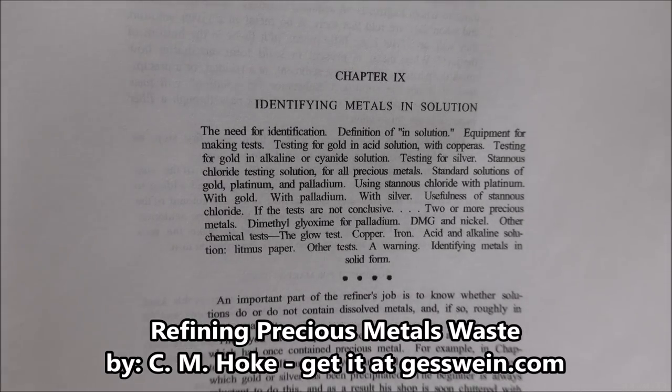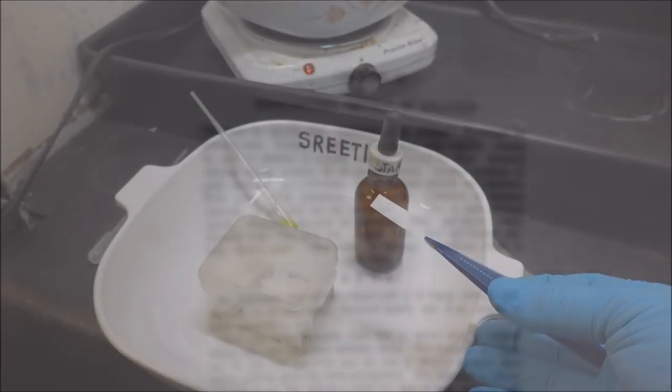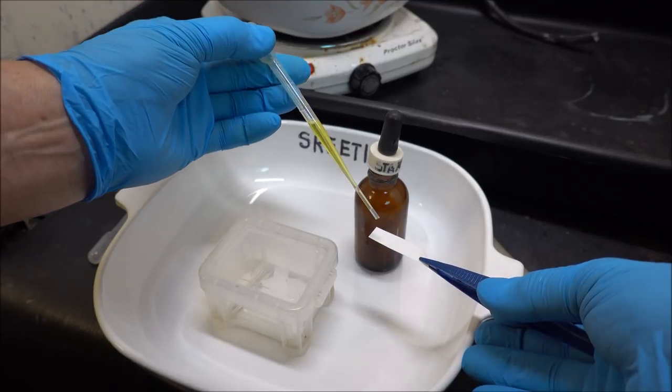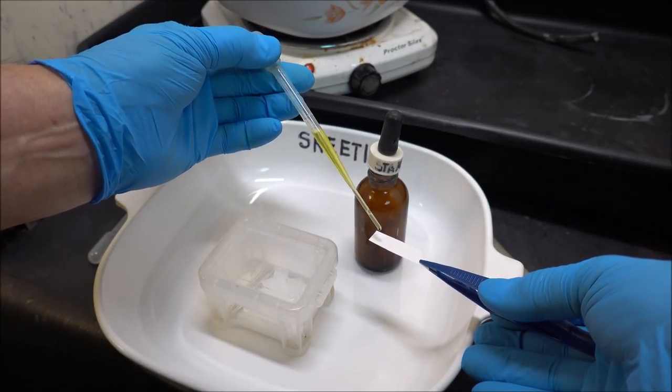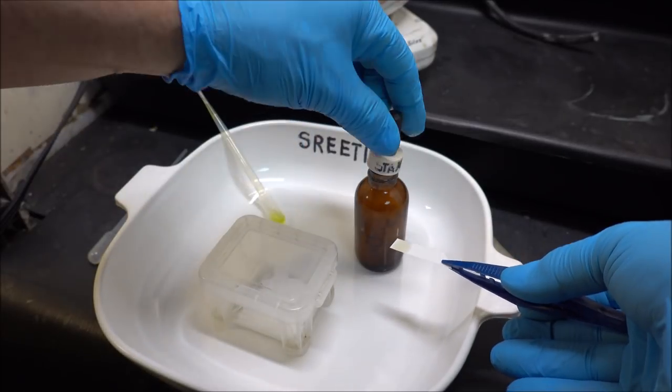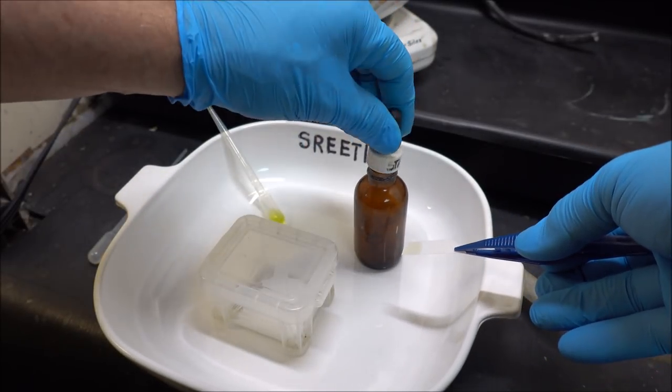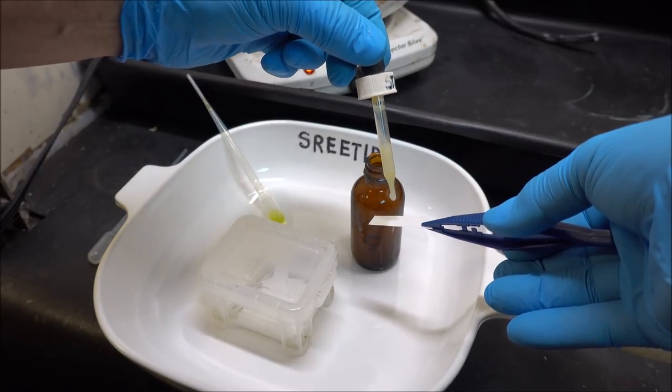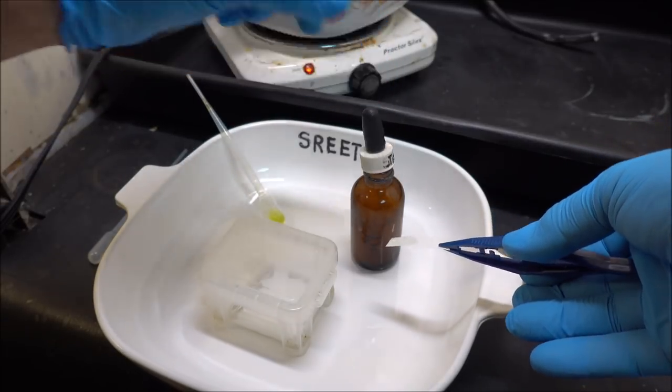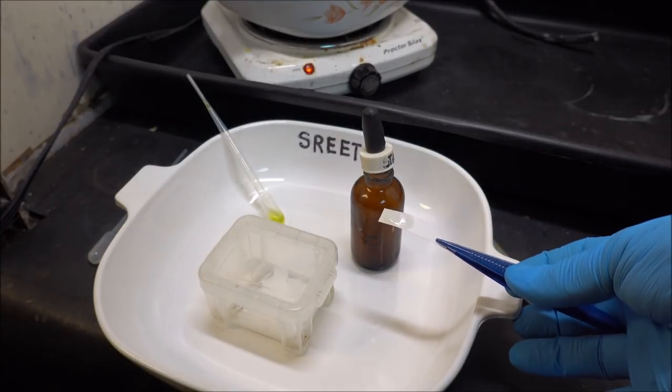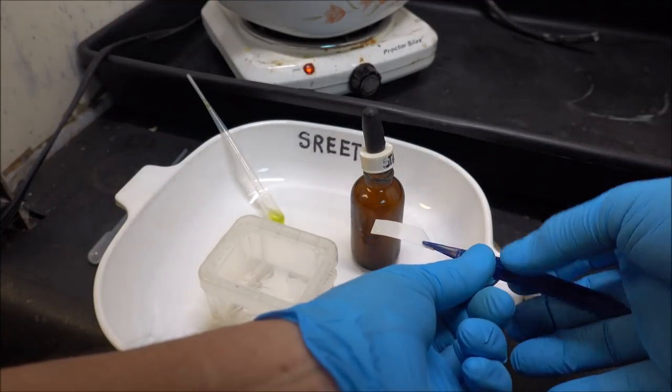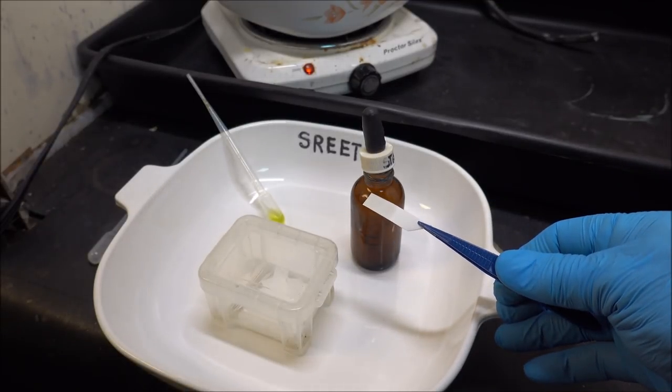I got the information for identifying those metals in solution out of Hoke's book in Chapter 9, Identifying Metals in Solution. Before we go any further, I'm going to put a little bit of our solution on a piece of filter paper here and do a stannis test, just to make sure we don't have any precious metals in solution. There you see, nothing. No kind of reaction for precious metals in solution.